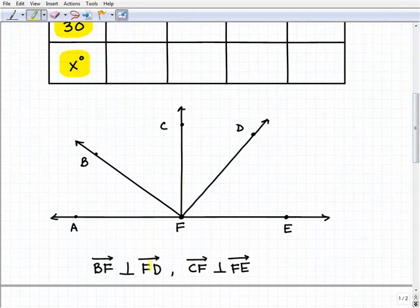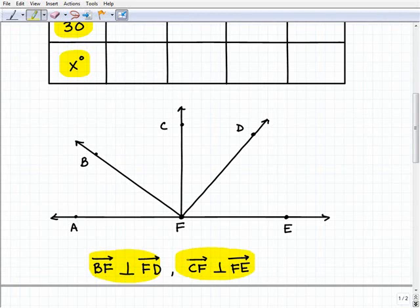Take note that we're given another piece of vital information: we have two pairs of rays that are perpendicular to one another. Ray BF is perpendicular to FD, so this total angle is 90 degrees. Really important.